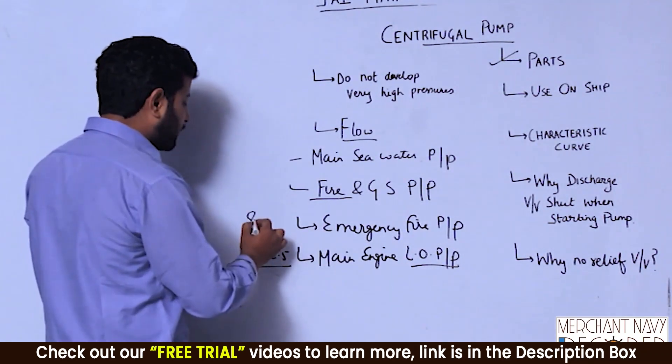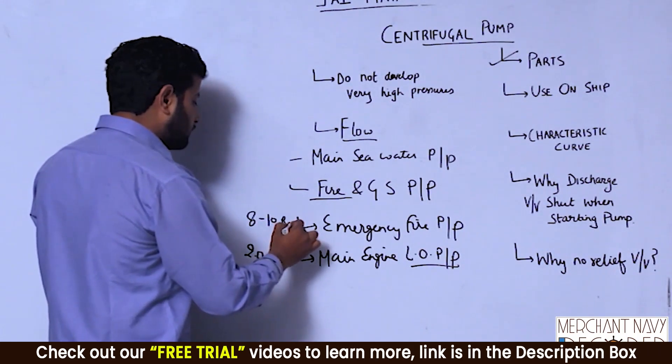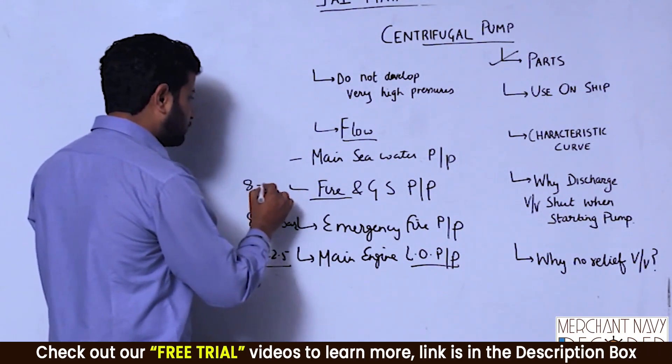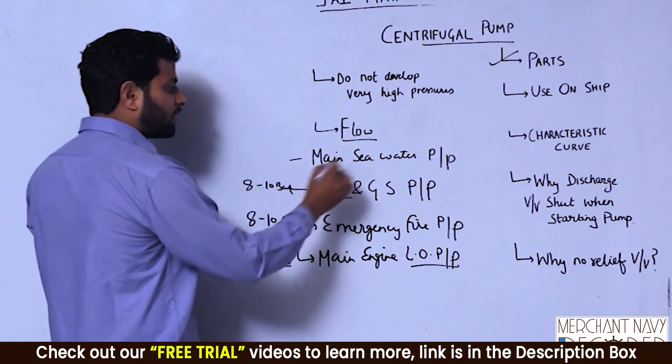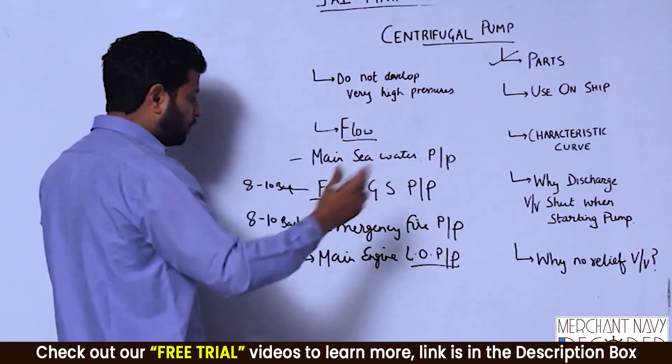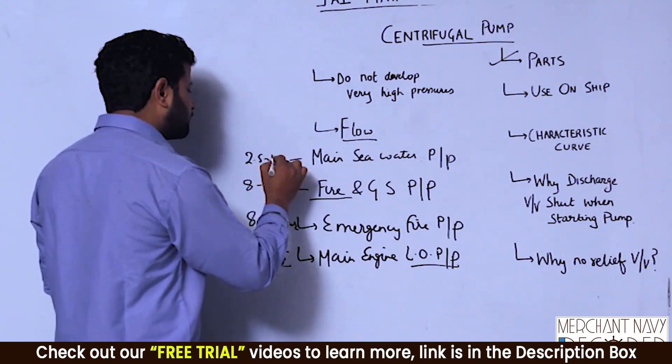Emergency fire pump can go up to 8 to 10 bars. Same goes for fire and GS pump, 8 to 10 bars. In main sea water, we have a lot of flow but pressure not more than 2.5 to 3 bars.